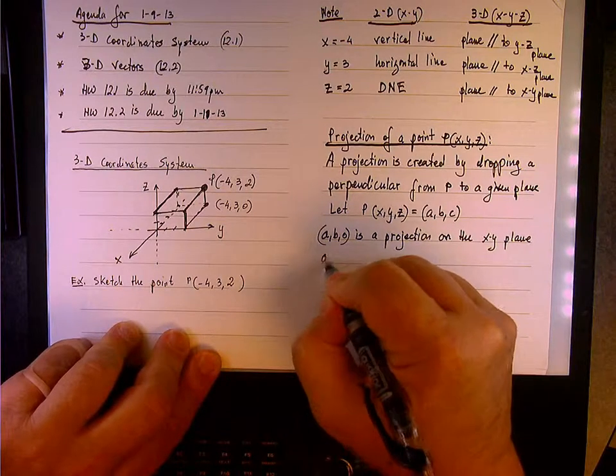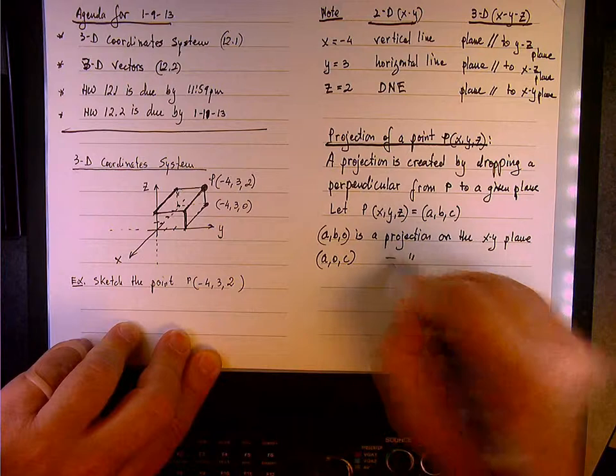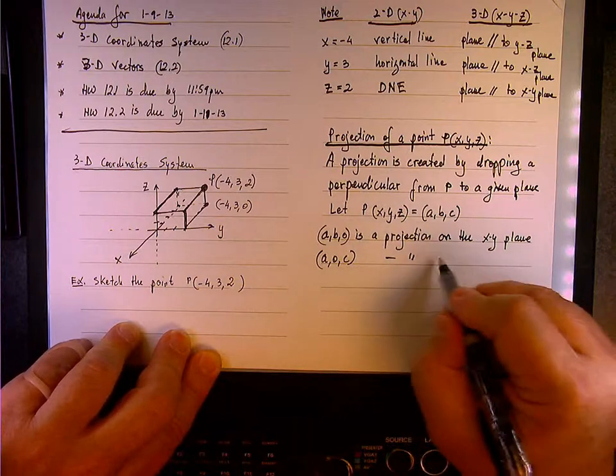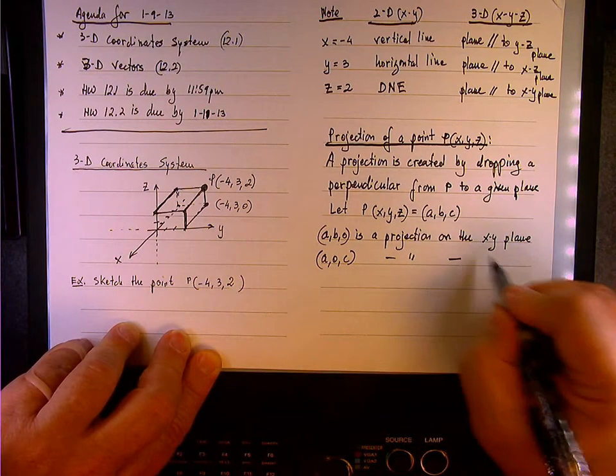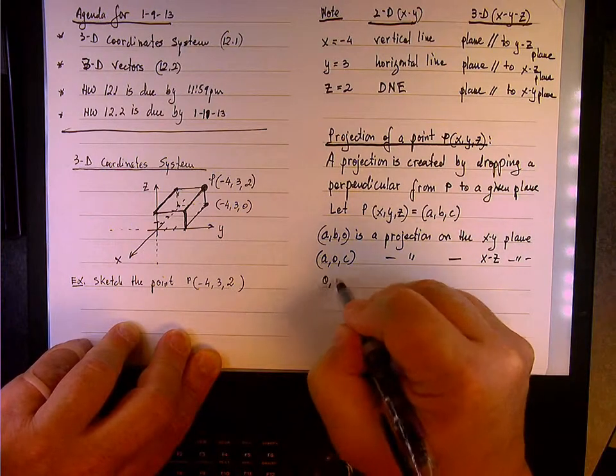we can say that A, 0, C is a projection on what plane? The xz plane. And finally,